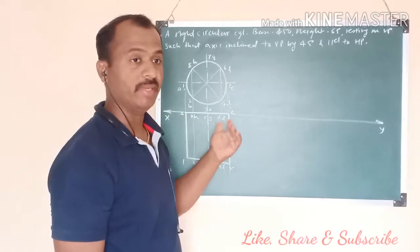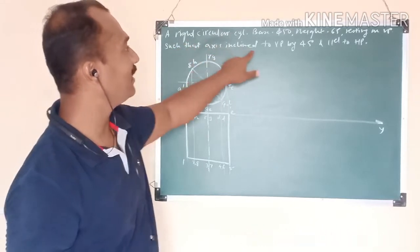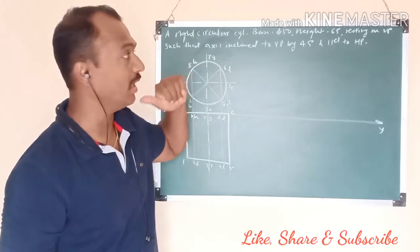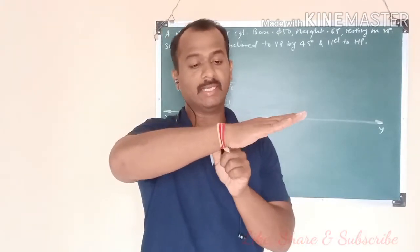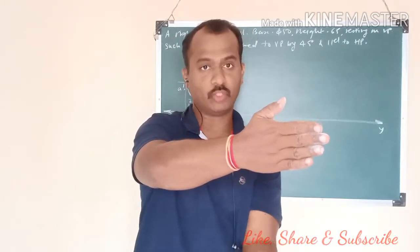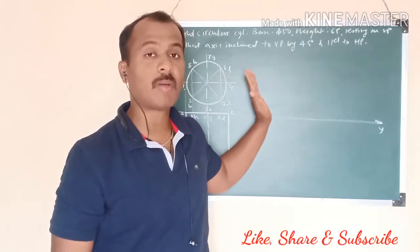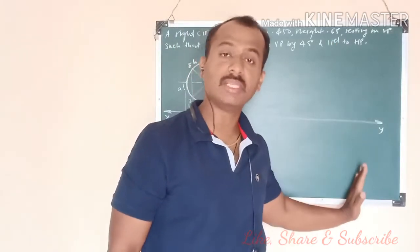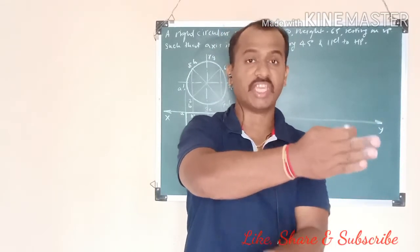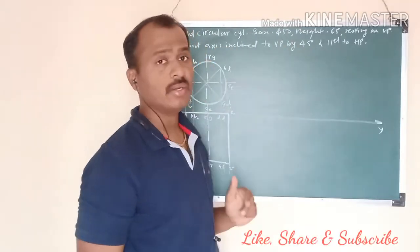In the second step, the axis is inclined to VP by 45 degrees. Since inclination to HP is not given, this problem is solved up to the second step only. Because the axis is parallel to HP and only inclined to VP at 45 degrees, we proceed to the second step.